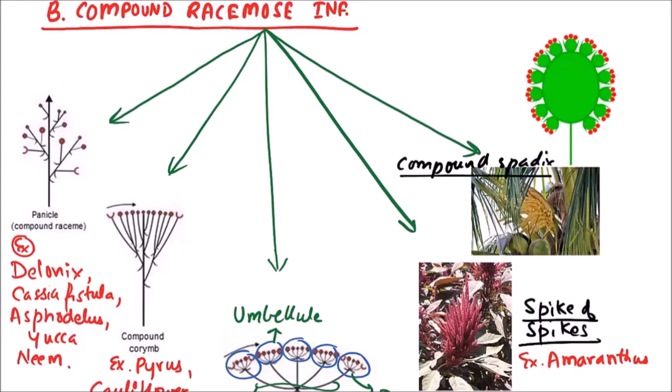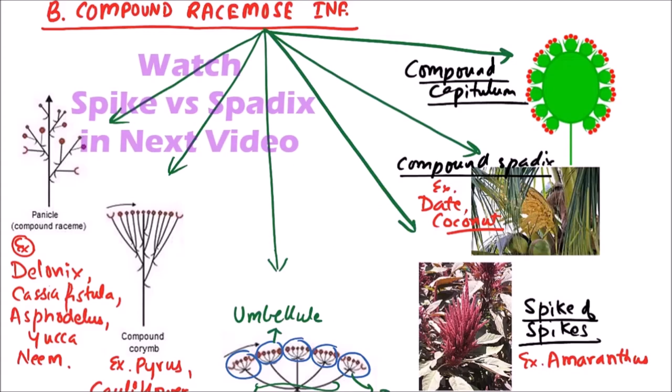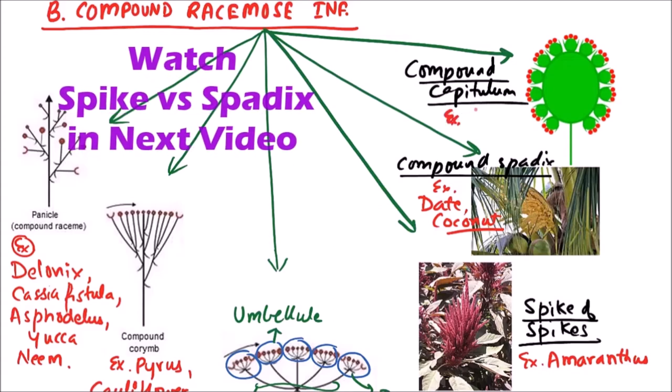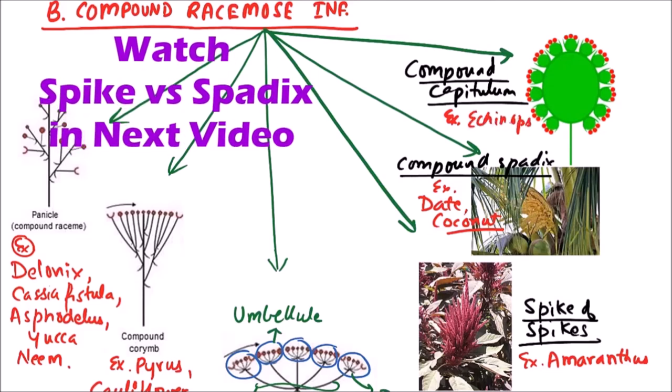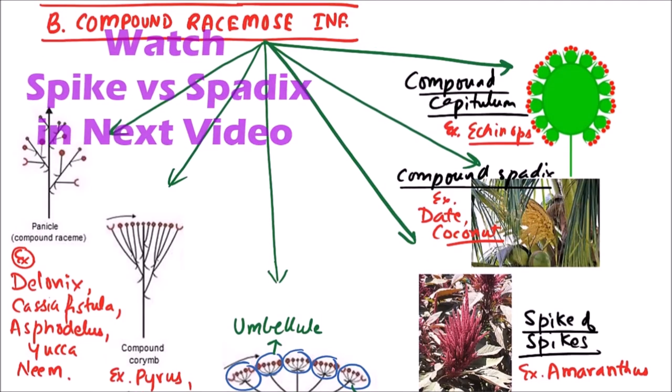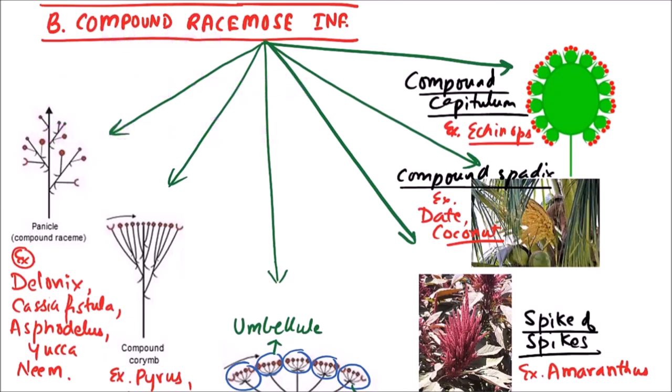The last type of compound racemose inflorescence is compound capitulum, which is capitulum of capitulum. The examples include Echinops. So these are the various types of compound racemose inflorescence and their examples. Thanks for watching this video.